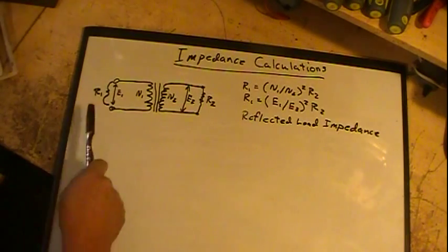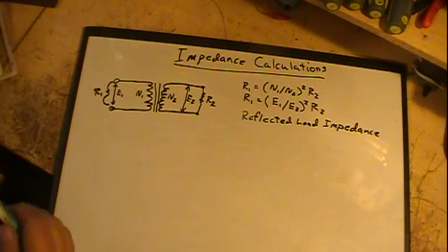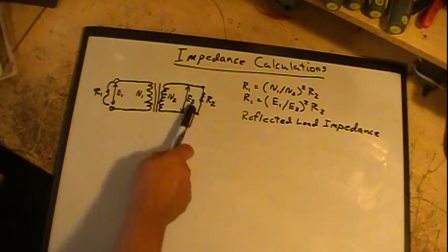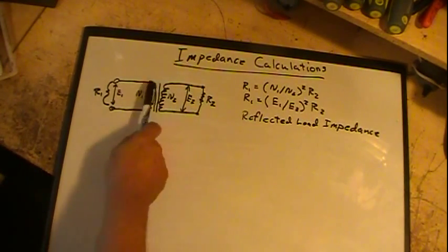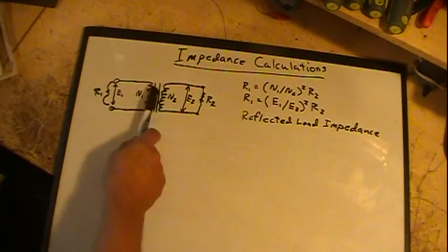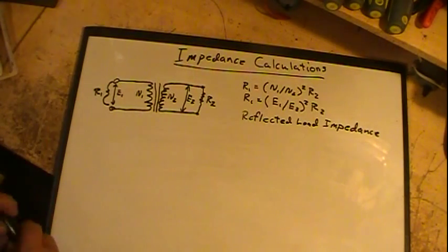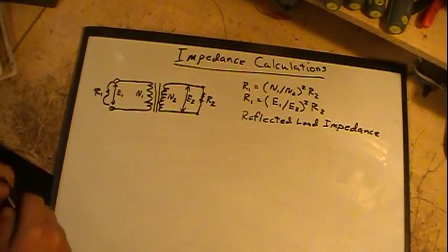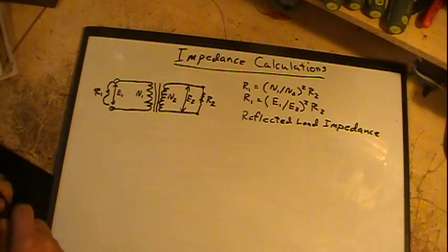So if you had a tube here and it was looking for a certain load for it, this load could be reflected back through the turns and be a load for the tube. And if the transformer is the right size, right number of turns on both primary and secondary, then it would be correct.